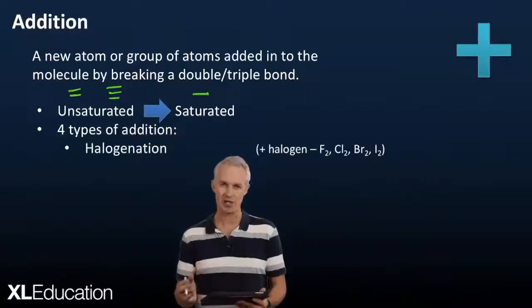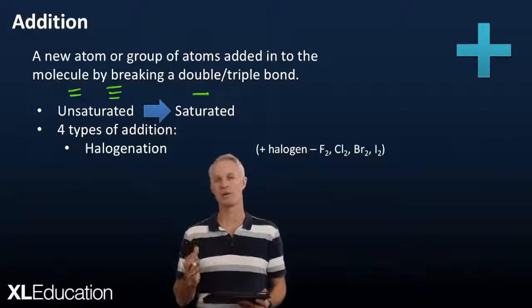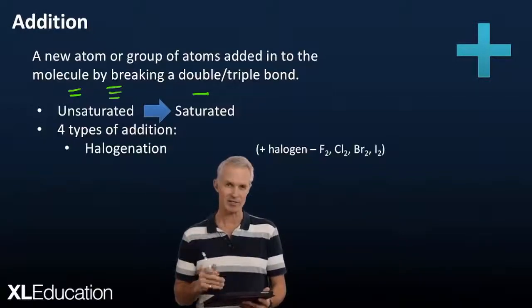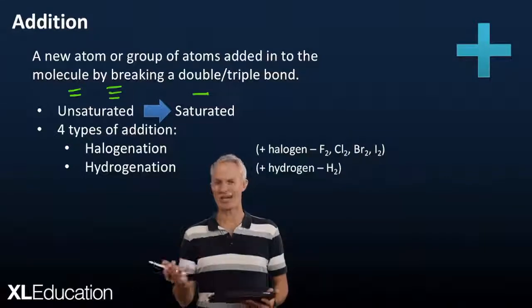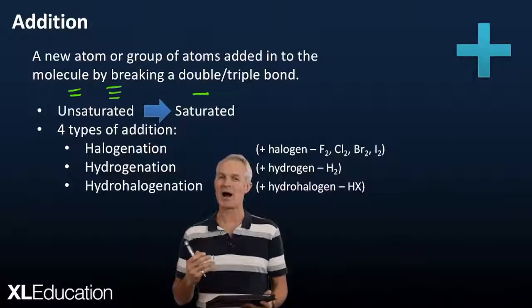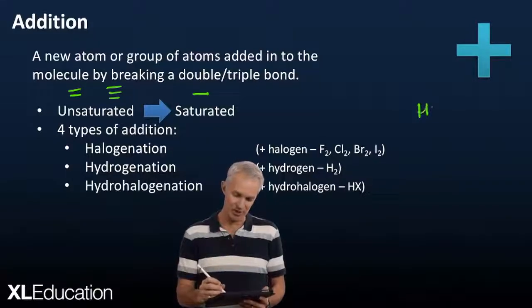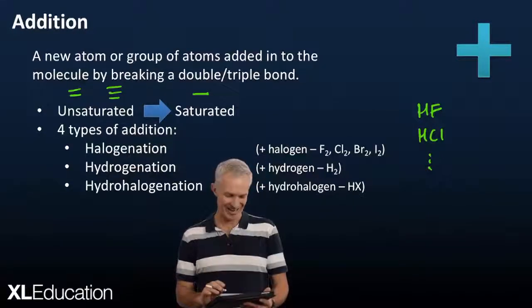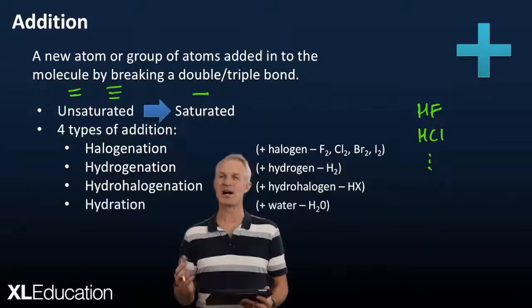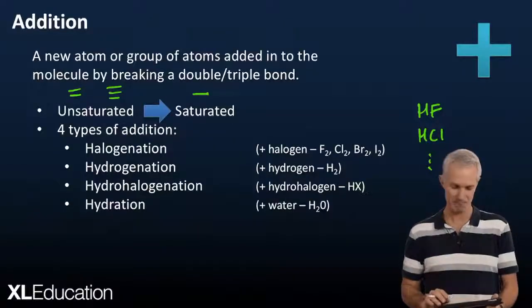There are four types of addition depending on what's being added. Halogenation is when you add a halogen — a Group 7 element like fluorine, chlorine, bromine, or iodine. Hydrogenation is when you're adding hydrogen. Hydrohalogenation is when you add a hydrohalogen such as HF, HCl, or HBr. And hydration is when you add water. So if you see a compound going from a double bond to a single bond, it must be addition.